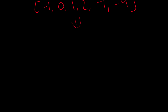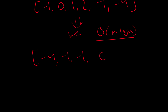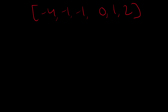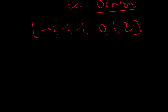So let's sort this array. Sorting takes O(n log n) time — that's just how sorting algorithms work. Once we sort it, we have the array: negative four, negative one, negative one, zero, one, two. This is the array we are going to work with. Keep in mind that our time complexity has already been established to be a minimum of O(n log n).